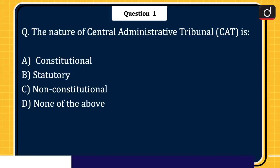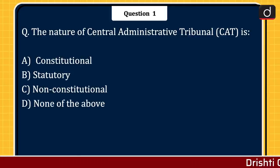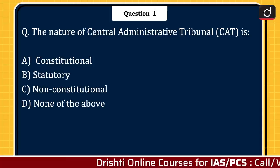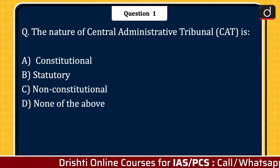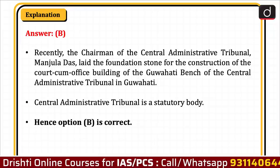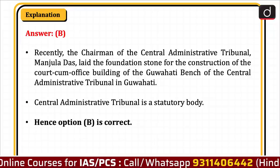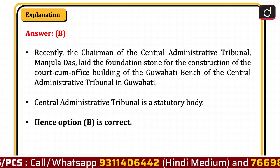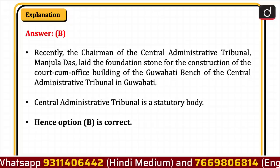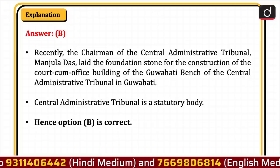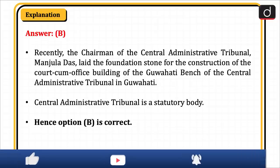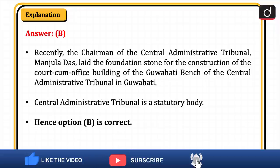Now let's begin today's session. The first question is: the nature of Central Administrative Tribunal (CAT) is constitutional, statutory, non-constitutional, or none of the above? The correct answer is option B, statutory. Recently, the Chairman of the Central Administrative Tribunal, Manjula Das, laid the foundation stone for the construction of the court-cum-office building of the Guwahati bench of the Central Administrative Tribunal in Guwahati. CAT is a statutory body, hence option B is correct.